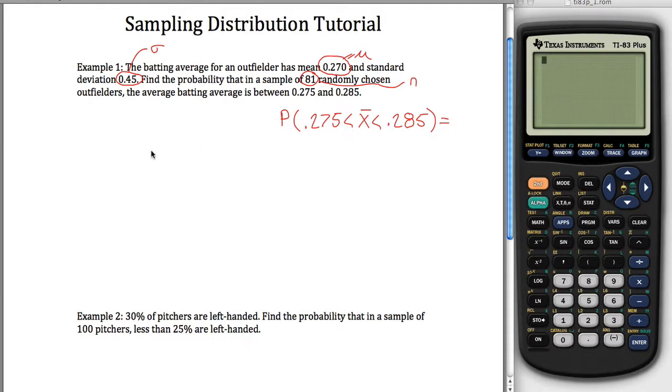So this is the thing we're trying to figure out. To figure this out, we need to note three things: we need to figure out the shape, the center, and the spread. And now we have to be a little bit more specific what we're talking about here, specifically of our sampling distribution. It gives us in the problem that we have a mean of 0.270 and a standard deviation of 0.45. Those are the center and the spread for the parent distribution for a single outfielder. That's not what we want to know. We want to know the shape, center, and spread for the sampling distribution for the average of these 81 outfielders.